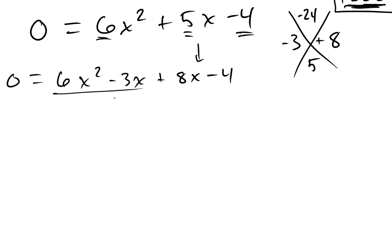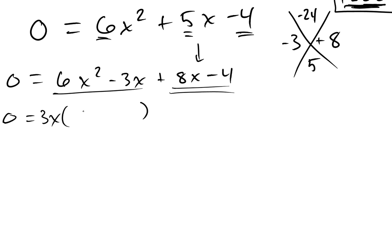I look at my first two terms and my second two terms. What's the greatest common factor of my first two terms? It's 3x. When I factor out the 3x, what am I left with? 2x minus 1. Then I bring down the plus.